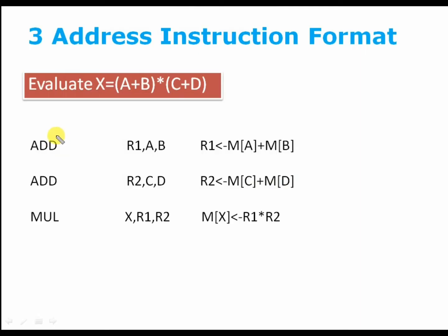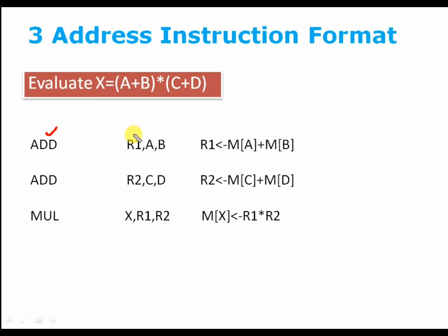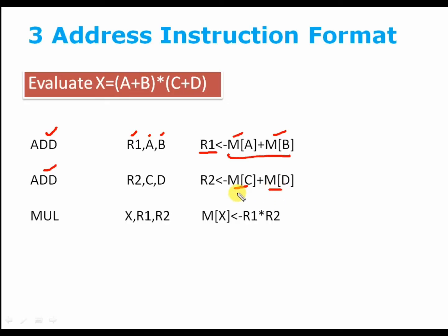So first of all, we are going to perform an addition operation. The operands we are going to use are R1, A, and B. Whatever is stored in memory A and memory B will be added and the result will be stored in register R1. Another addition operation will add memory of C and memory of D, and the result will be stored in register R2.